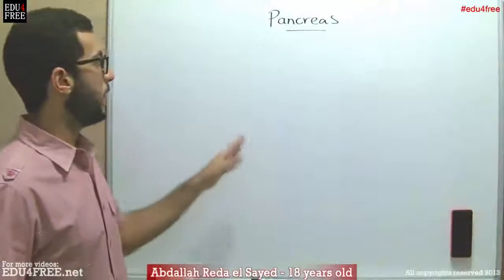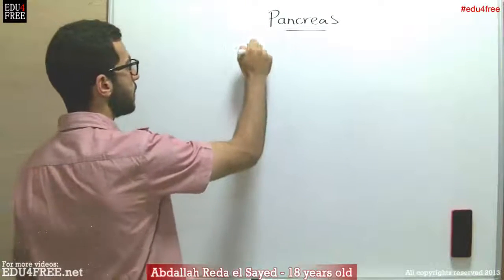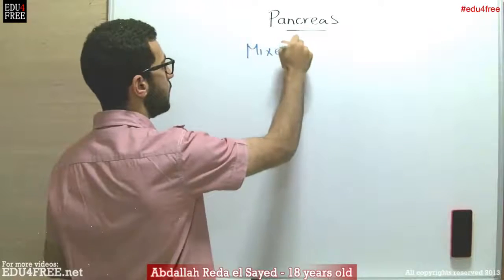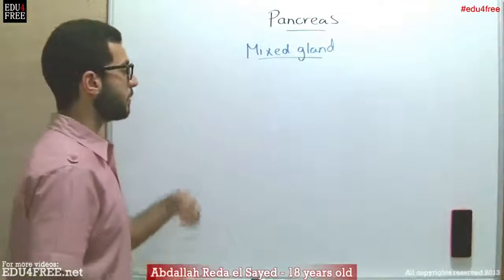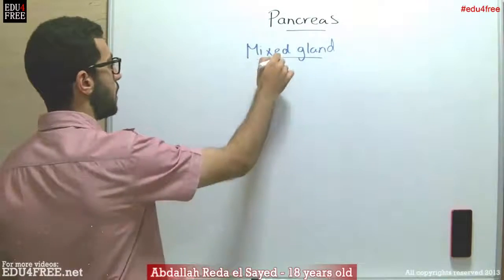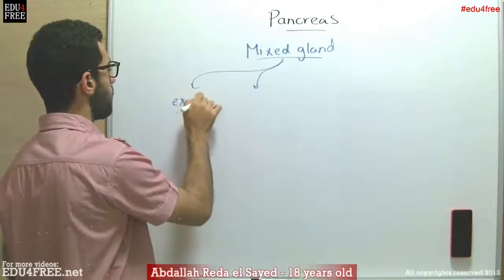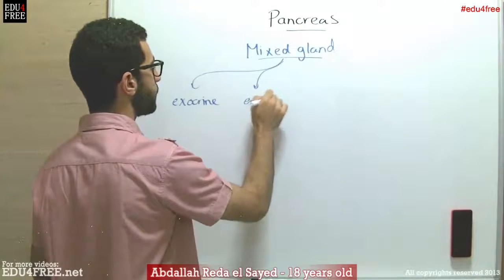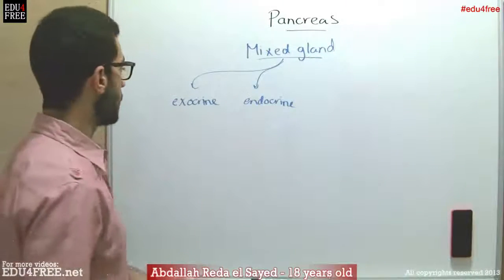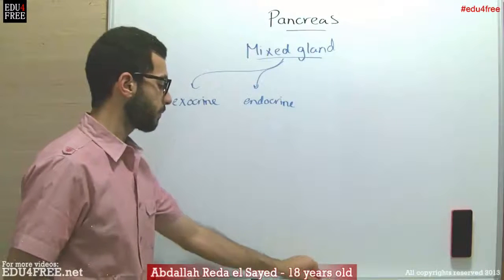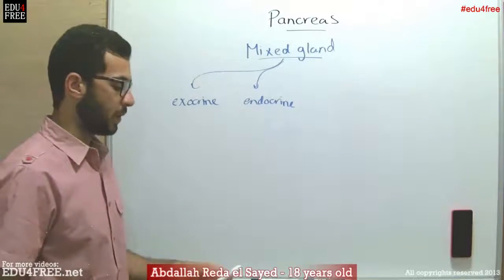Today we are going to talk about the pancreas. The pancreas is a mixed gland, meaning that it has both endocrine and exocrine functions. This means that the pancreas secretes some secretions through ducts and other secretions directly into the bloodstream.